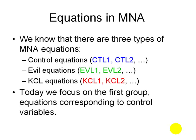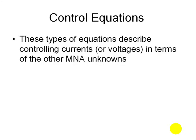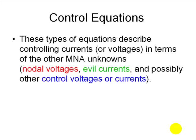Today our attention will concentrate on the equations of the first group — equations corresponding to variables that control dependent sources, currents and voltages. These equations describe controlling currents or controlling voltages in terms of other MNA unknowns. We will write those Vx's and Ix's as functions of node voltages, or functions of evil currents in evil branches, and even possibly as functions of other controlled voltages or controlled currents. That is a control equation.